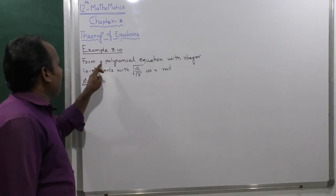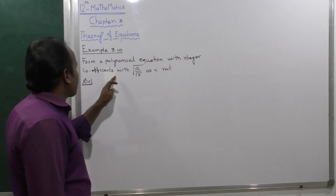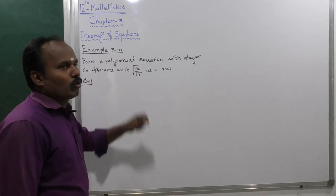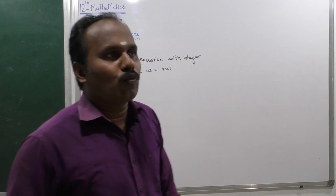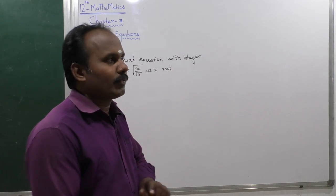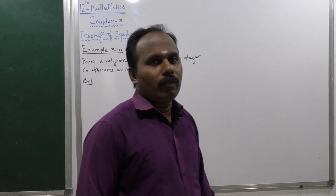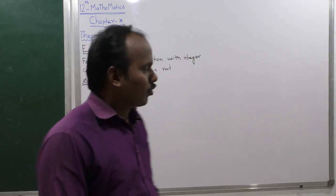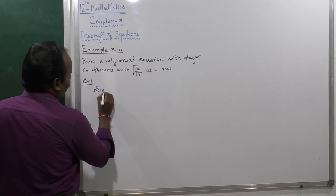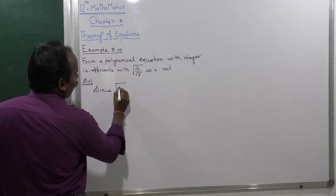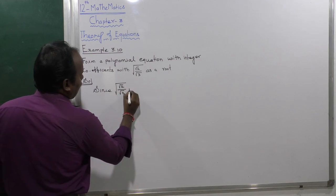Example 3: Form a polynomial equation with integer coefficients represented with root of root of root 2 divided by root 3. To form the equation of minimum degree, our main goal is to remove the square root. Since root of root 2 divided by root 3 is a root...